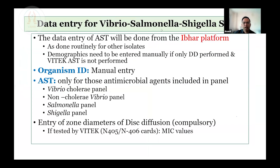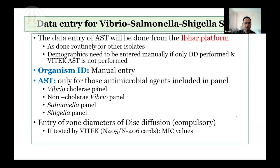Data entry for Vibrio, Salmonella, and Shigella study will be done using the IBAR platform as done routinely for other isolates. Demographics need to be entered manually if only disk diffusion is performed and Vitek AST is not performed. When AST is done using Vitek, the MIC data will be transferred to IBAR automatically. When disk diffusion alone is done, the whole data entry must be done manually including organism ID. The zone diameter must be definitely mentioned — it is compulsory. If tested by Vitek using N405 or N406 cards, MIC value should be included.